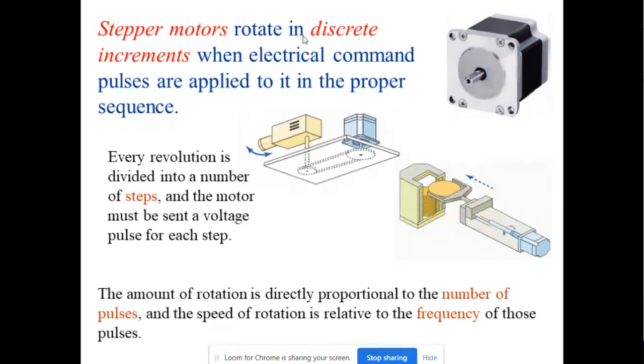Stepper motor. Basically, it rotates in discrete increments when electrical command pulses are applied to it in the proper sequence. Every revolution is divided into a number of steps and the motor will be sent a voltage pulse for each step. The amount of rotation is directly proportional to the number of pulses, and speed of rotation is related to the frequency of the pulses. These are the stepper motors.